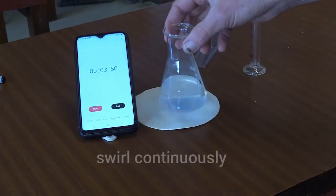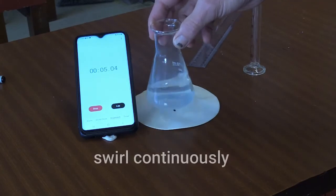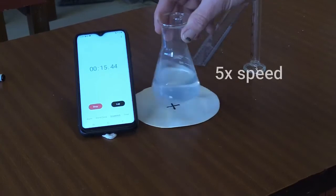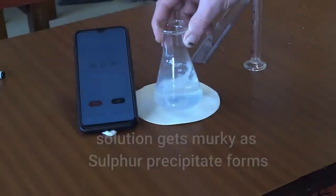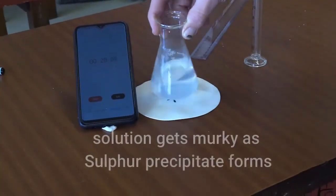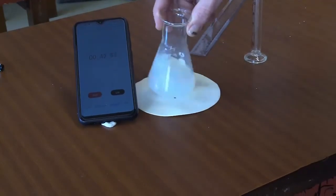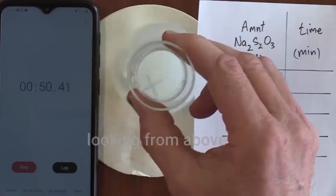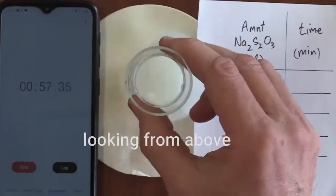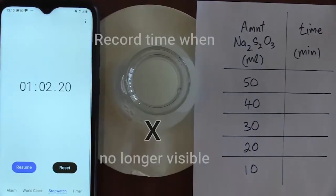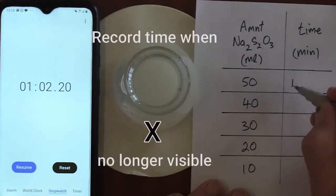We then swirl the conical flask continuously. This takes time so we've sped it up. Notice the solution gets murky as the sulfur precipitate forms. Looking from above, we record the time when the X is no longer visible at 1 minute and 2 seconds.